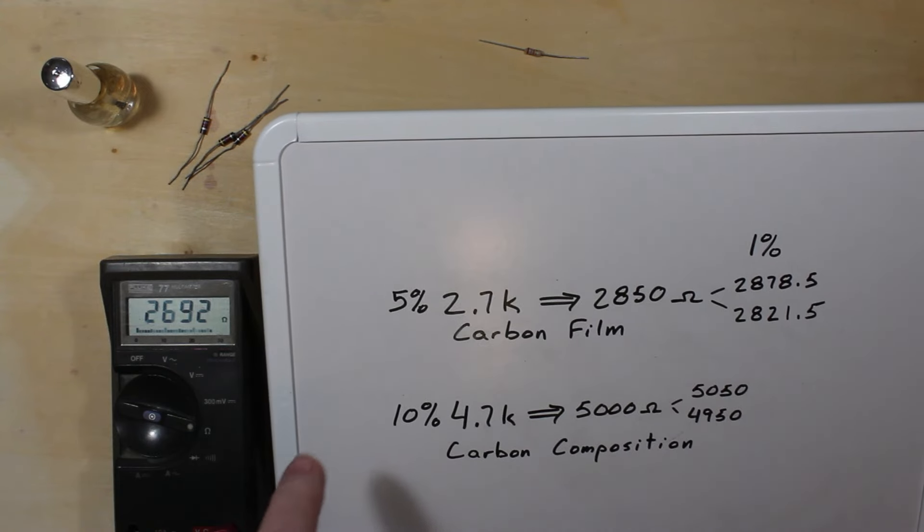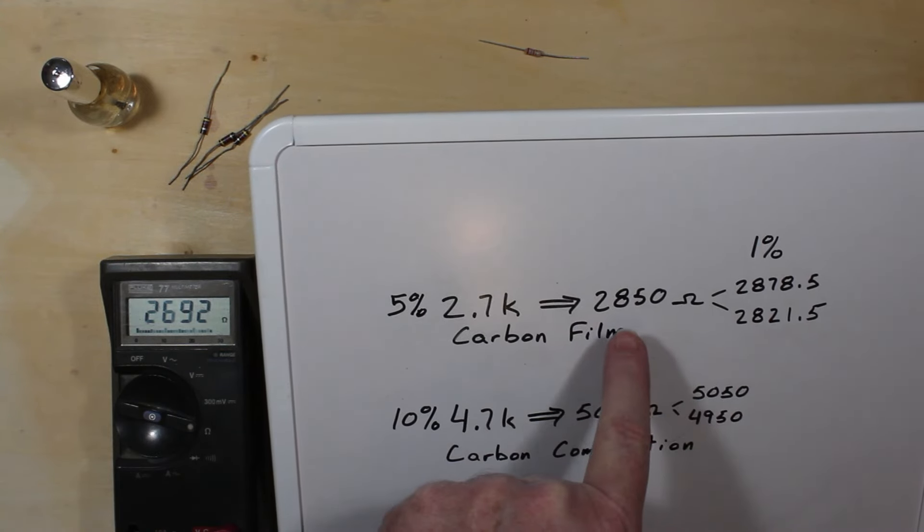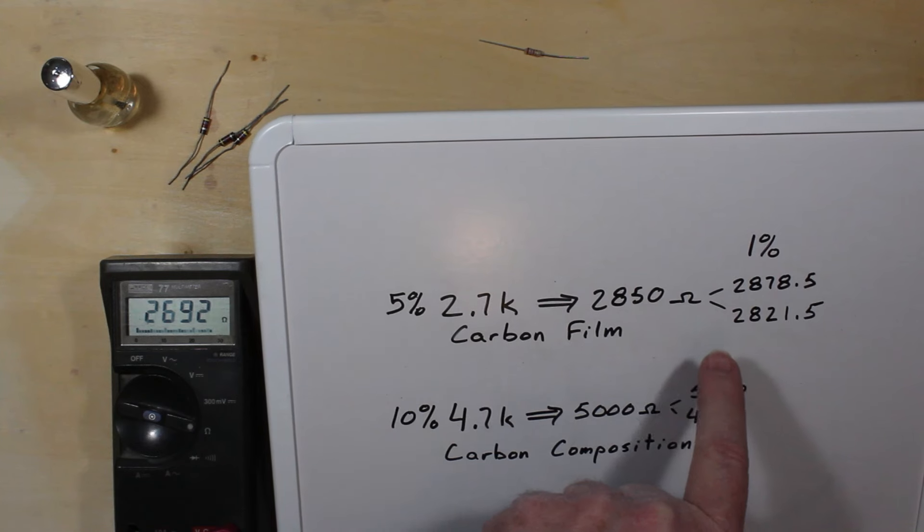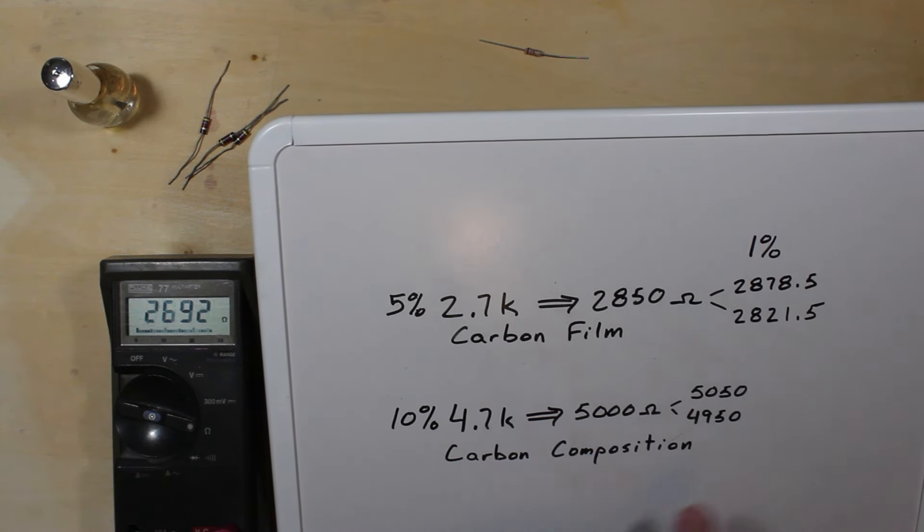We have the 2700s and we're going for 2850. If we want to keep it within 1%, this is our values that we want to shoot for.